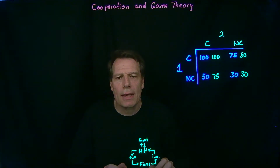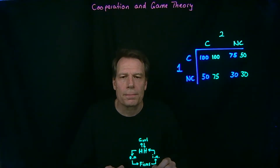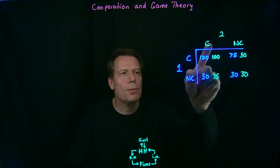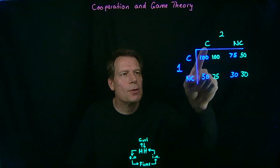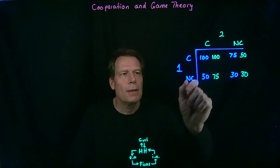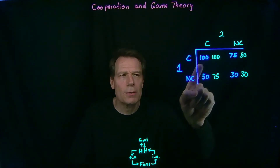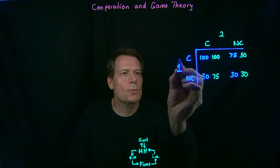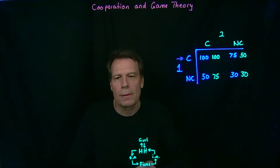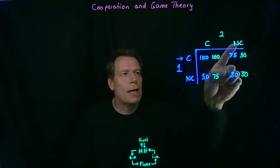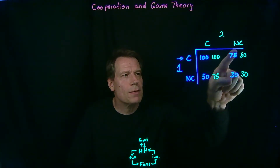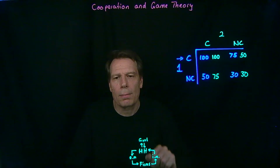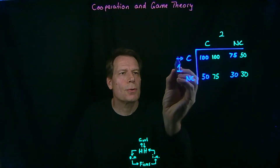Now we can look at this game matrix and think through the incentives the two players face. Think about being Player 1. Suppose you think that Player 2 is going to cooperate — you're in that column, and you have a choice between cooperating and getting 100 or not cooperating and getting 50. 100 is better, so you would choose to cooperate. Suppose instead you think Player 2 is not going to cooperate. Then you face a choice between 75 from cooperating and 30 from not cooperating. 75 is better, so again you should cooperate.